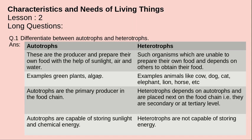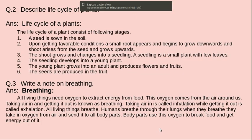Examples of autotrophs are green plants and algae. Examples of heterotrophs include animals such as cow, cat, dog, etc. Autotrophs are the primary producers in the food chain while heterotrophs are at the secondary or tertiary level. Autotrophs are capable of storing sunlight energy while heterotrophs cannot store energy.